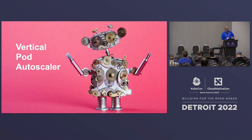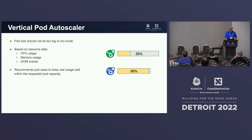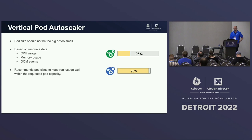The next thing that SIG autoscaling owns is the Vertical Pod Autoscaler. VPA helps you get the pod size right. It is based on actual historical resource usage of the pods. It looks at CPU and memory usage and pays attention to out-of-memory events.